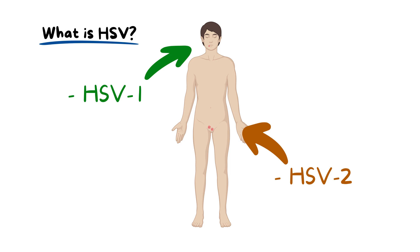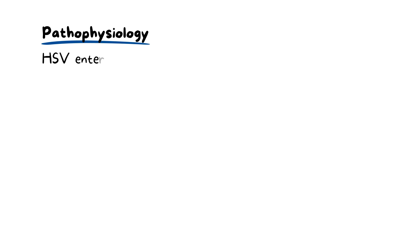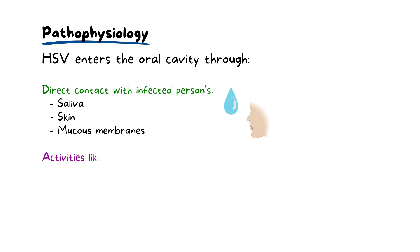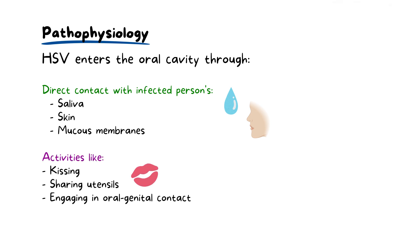In recent times, the line between HSV-1 and HSV-2 is becoming less distinct. HSV-2, which is often associated with genital herpes, can now be found in the oral cavity due to oral-genital sexual interactions. The herpes simplex virus primarily enters the oral cavity through direct contact with an infected person's saliva, skin, or mucous membranes. The virus is highly contagious and can spread through activities like kissing, sharing utensils, or engaging in oral-genital contact.